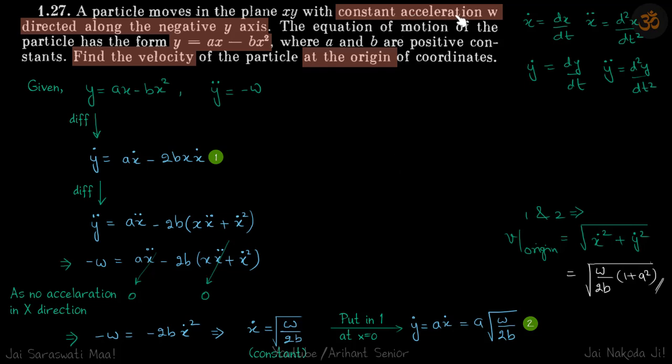We are given a particle traveling with constant acceleration w directed along the negative y-axis. Let's call it minus w for the acceleration. Here we are using different notations: a single dot means single derivative with respect to time, double dot means double derivative with respect to time. Same with y. The equations will look much neater that's why we're doing it.